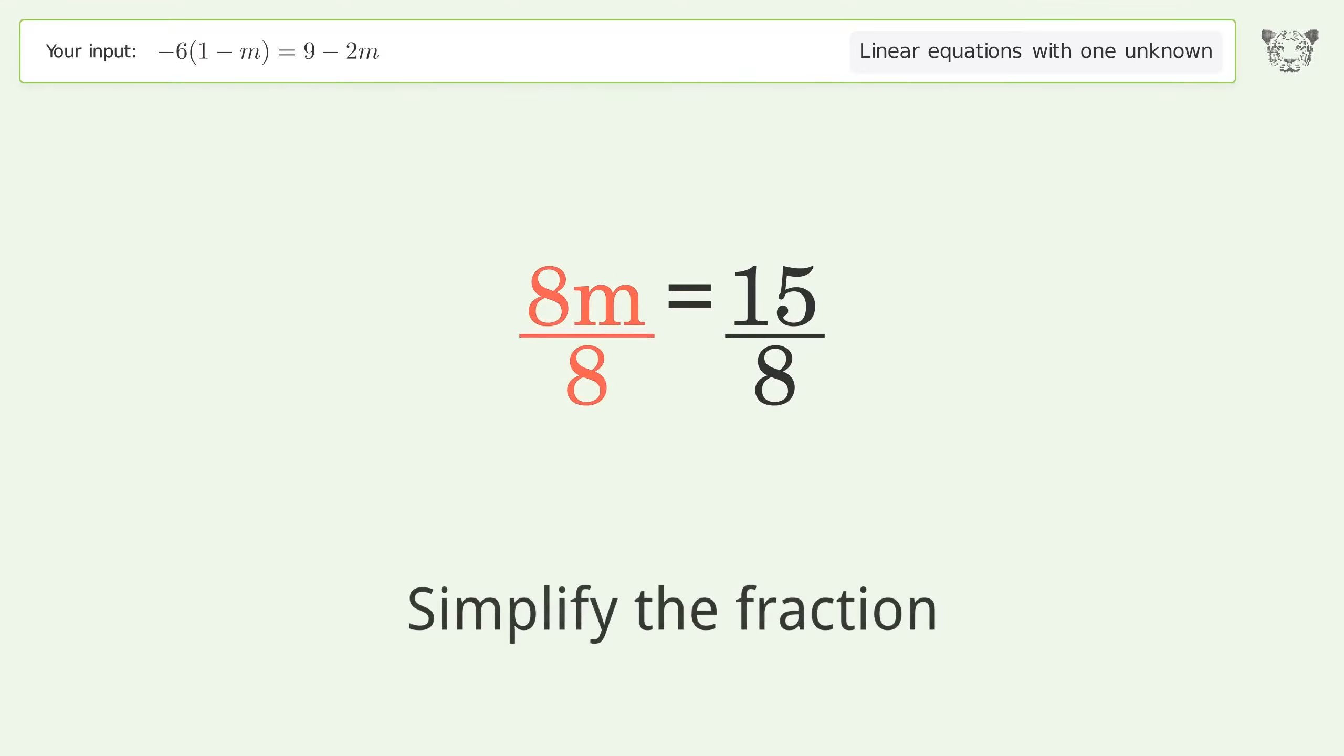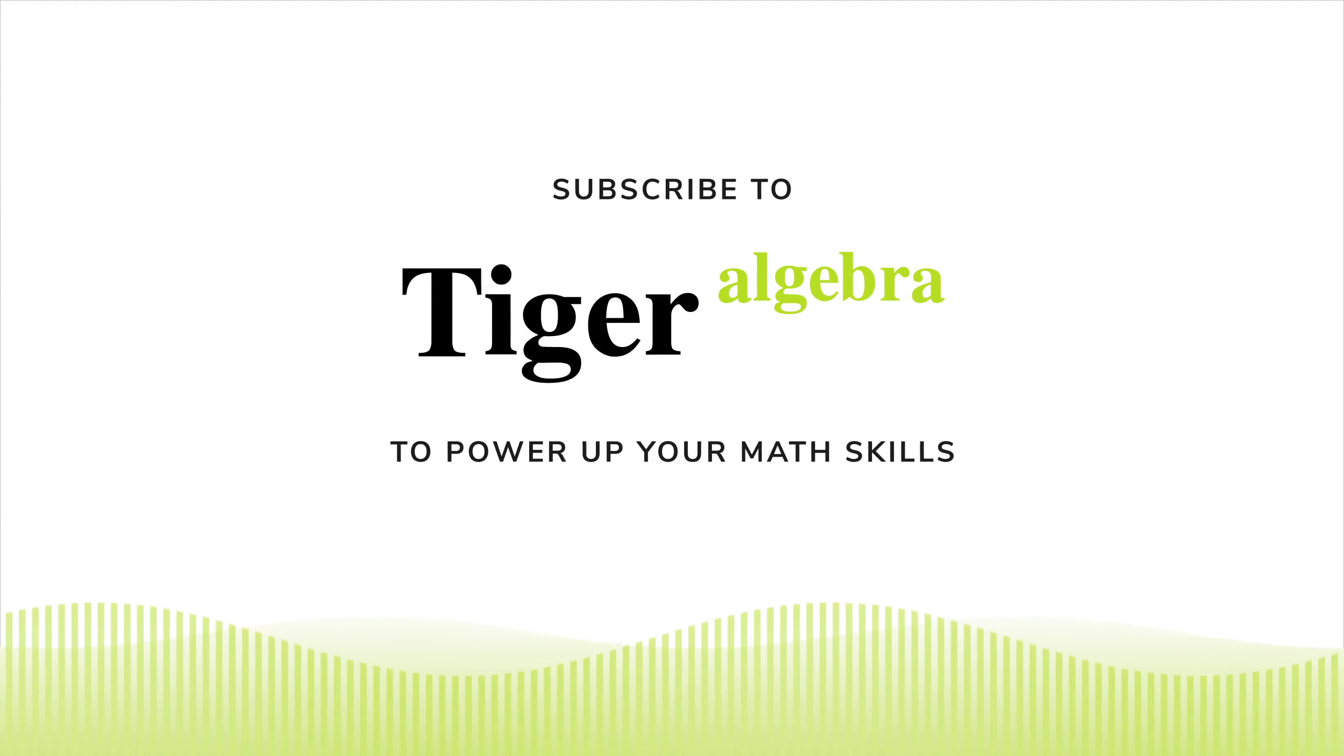Isolate the m. Divide both sides by 8. Simplify the fraction. And so the final result is m equals 15 over 8.